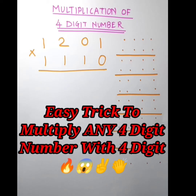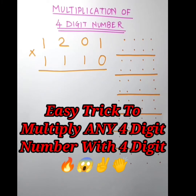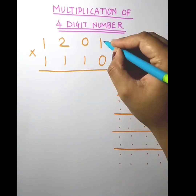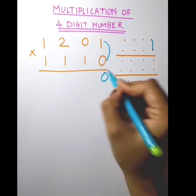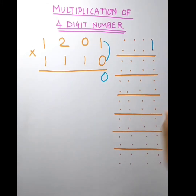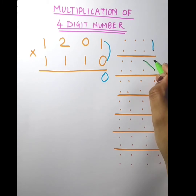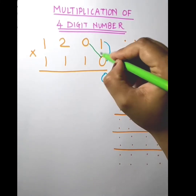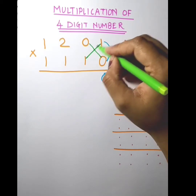Let's see the multiplication for a four-digit number. We multiply first these two digits: 1 into 0, so 1 into 0 is 0. Next we multiply these two digits — this into this and this into this — that is 0 into 0 and 1 into 1. So 0 into 0 is 0 and 1 into 1 is 1.